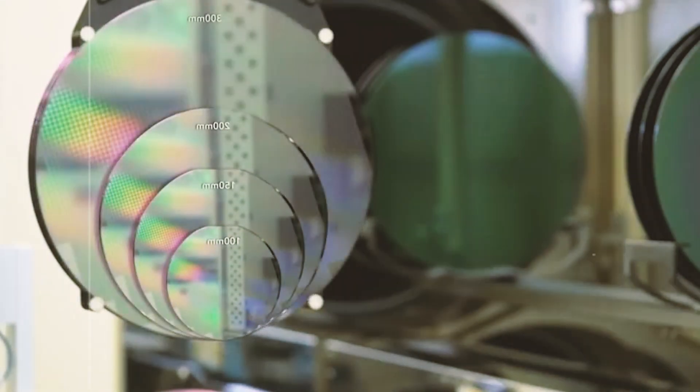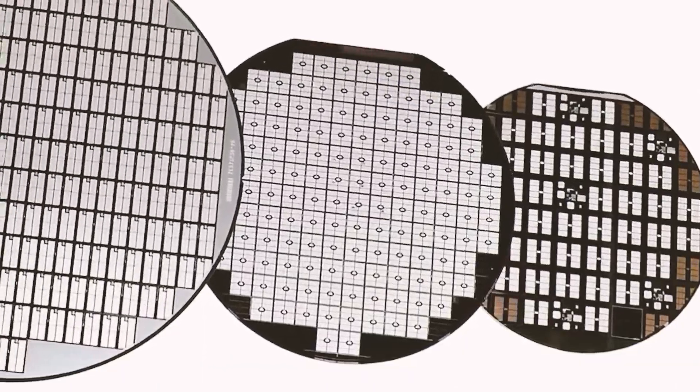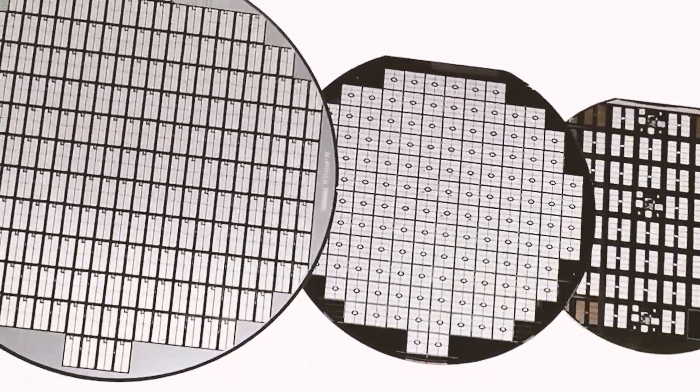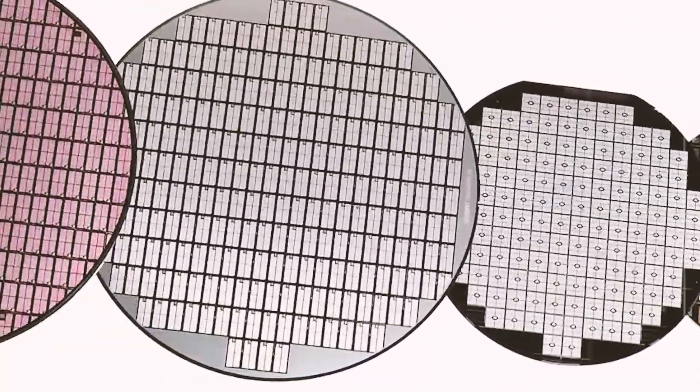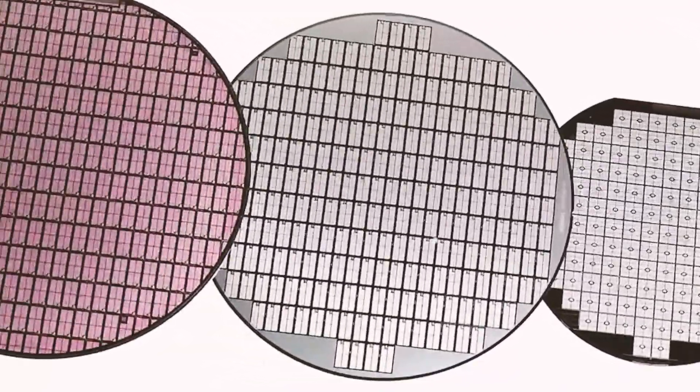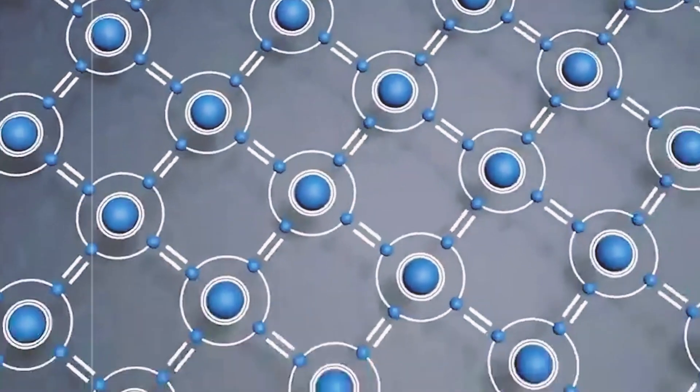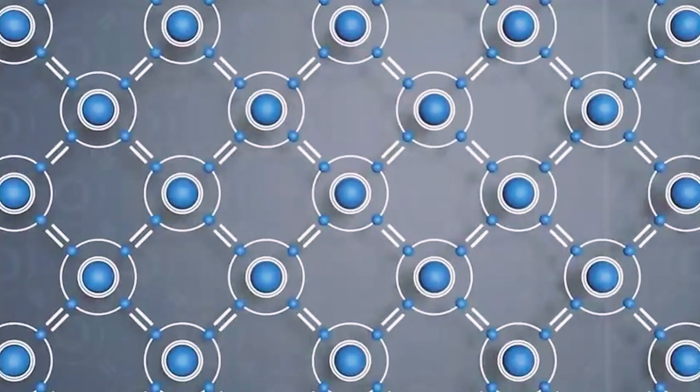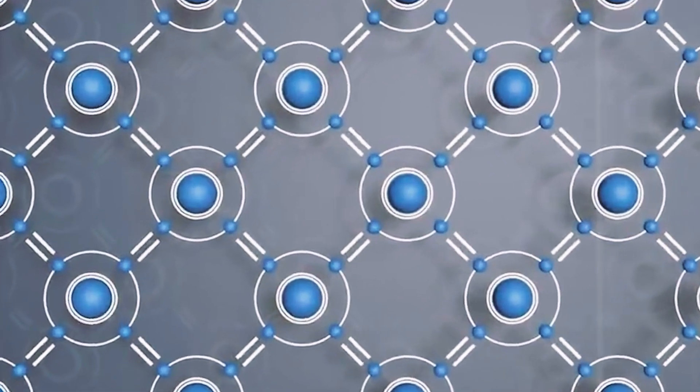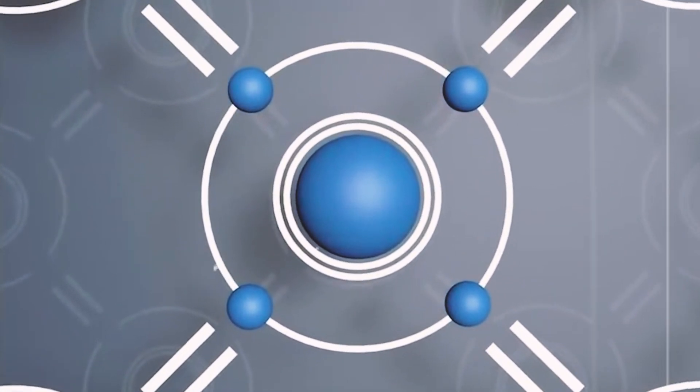Microchips are an essential component of electronic devices, acting as the brain that powers their functionality. The size of a microchip is measured in nanometers, with smaller numbers indicating smaller transistors and greater processing power. The development of 7nm microchips represents a breakthrough in the semiconductor industry, as it allows for the integration of more transistors onto a single chip, resulting in increased performance and energy efficiency.